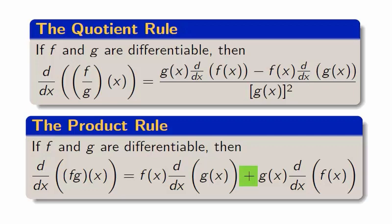For the product rule, f times g prime and g times f prime can be summed in any order as addition is commutative. However, the numerator in the quotient rule cannot be written arbitrarily. The derivative of the top function always appears first.